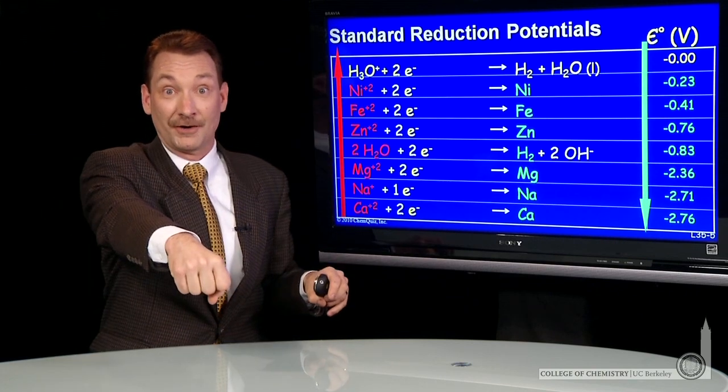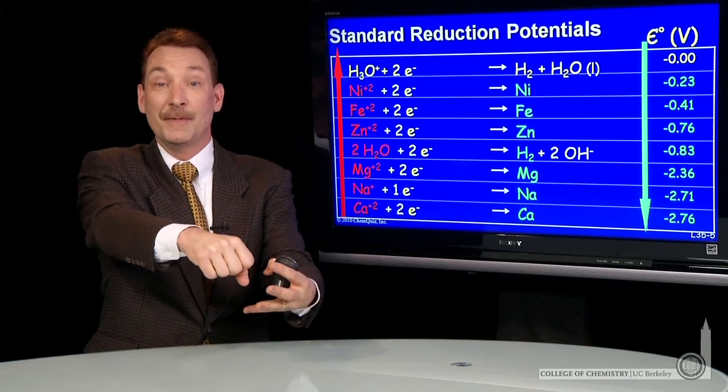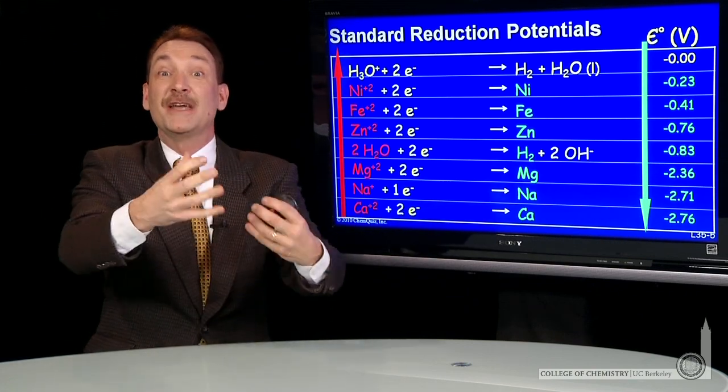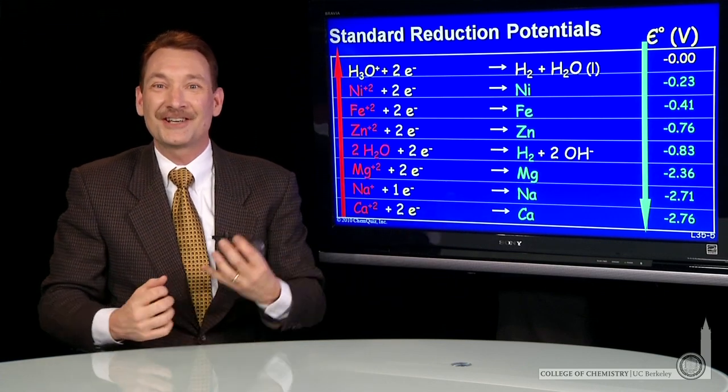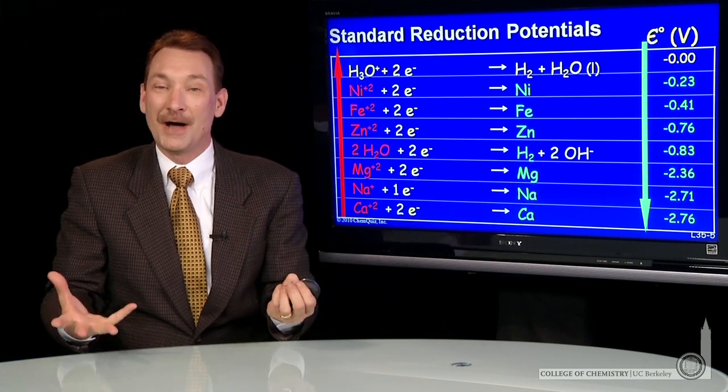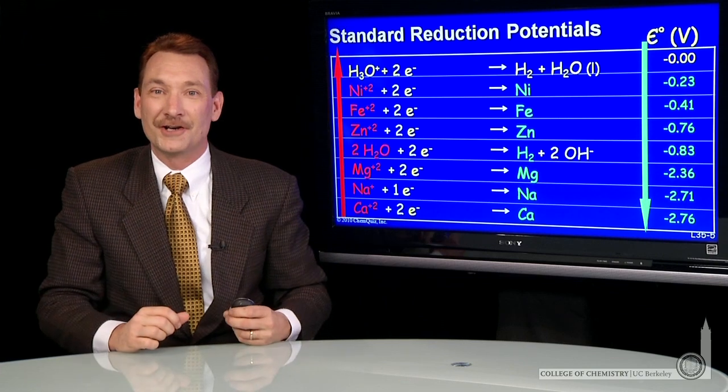If you give up your electrons, something else must accept them. And that thing that accepts them becomes reduced. Its oxidation number is reduced by accepting negatively charged electrons.